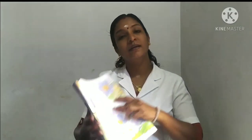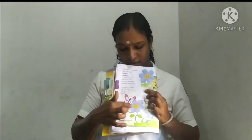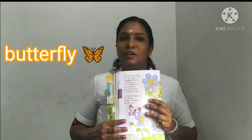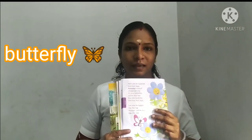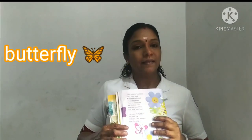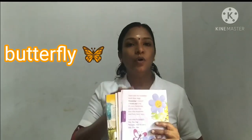And what is the next one? What is it? Butterfly. You have seen this butterfly everywhere. Do you love butterflies? I also love these butterflies. So, these are the insects we are going to meet in this poem.